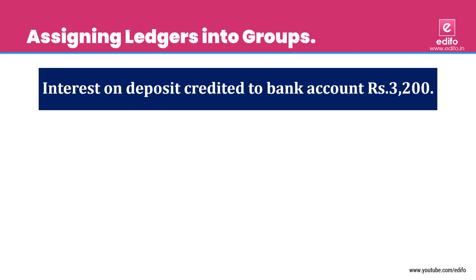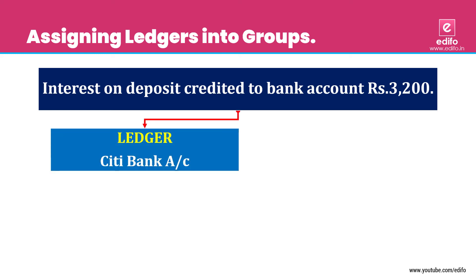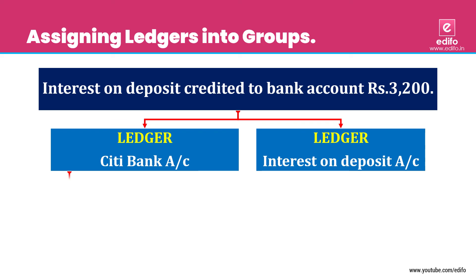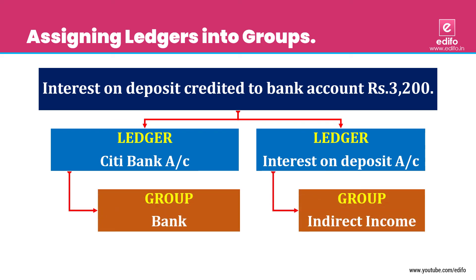Next transaction: interest on deposit credited to bank account, Rs. 3,200. The bank directly deposits the interest amount into our bank account, so the bank account automatically increases. Two aspects: Citibank account and interest on deposit account. Citibank belongs to 'Bank' group and interest on deposit account relates to 'Indirect Income'.